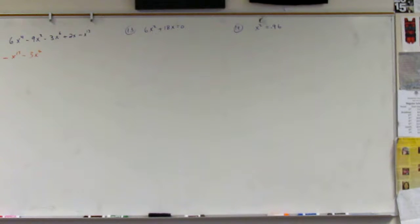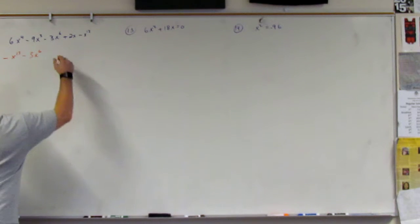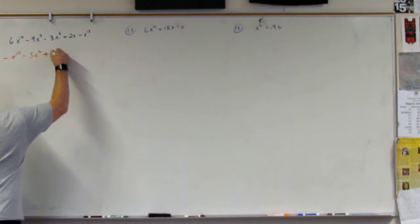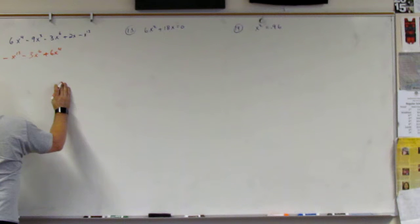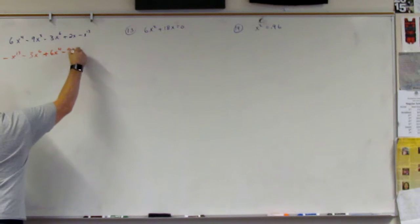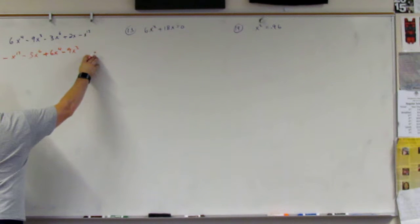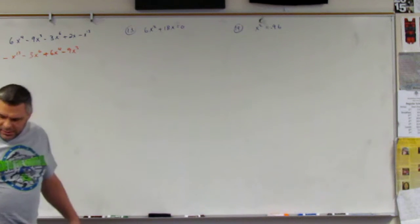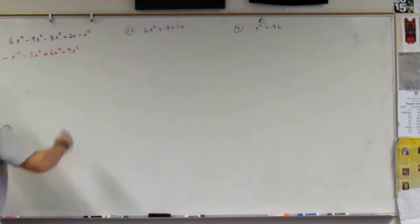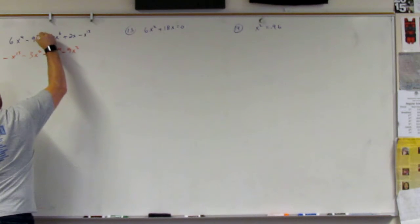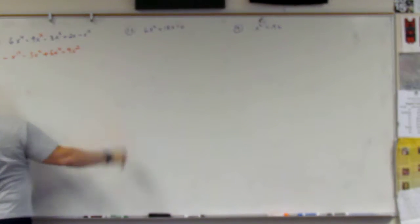Okay, all right, so then what? Plus 6x to the 4th. So plus 6x to the 4th. Minus 9x. To the 3rd? Second. Is it the 2nd? Yeah, it's a 2. My bad, that's a 2. And then what? Plus 2x. Plus 2x.